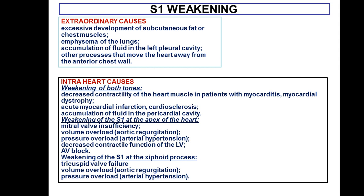Weakening of S1 at the apex on the projection of the mitral valve is caused by mitral valve insufficiency, volume overload in aortic regurgitation, pressure overload in arterial hypertension, and decreased conduction of the left ventricle or AV blockages. Weakening of S1 at the auscultation point of the tricuspid valve is caused by tricuspid valve failure, volume overload, and pressure overload.